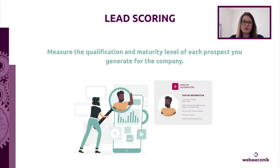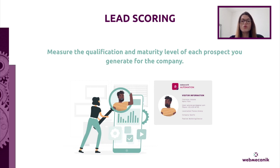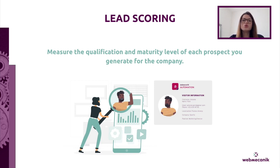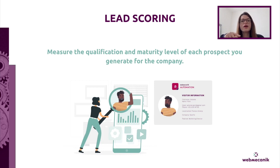Depending on the number of points assigned to each contact, you'll know where they are in their purchasing process. Lead scoring is a more advanced part of a marketing automation strategy. The best approach is to first build your marketing automation strategy without lead scoring, then analyze the behavior of contacts who became customers in the past to determine common elements. Identify the important contact points and try to repeat the operation with contacts who haven't become customers yet. Data that can be used includes demographic data, company information, online behavior, and email engagement.